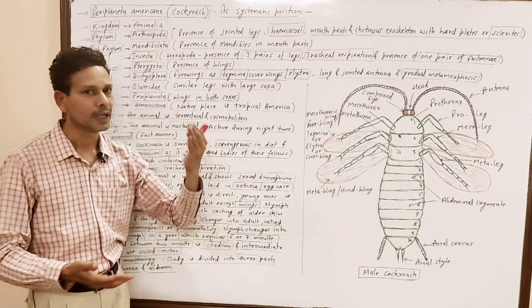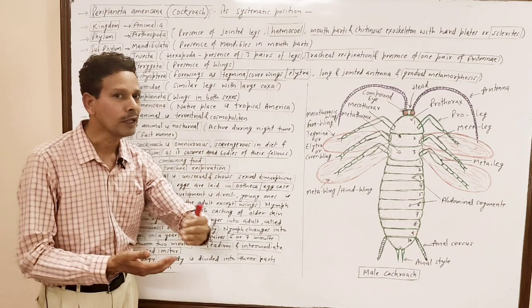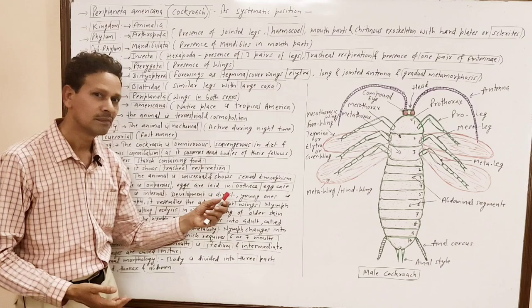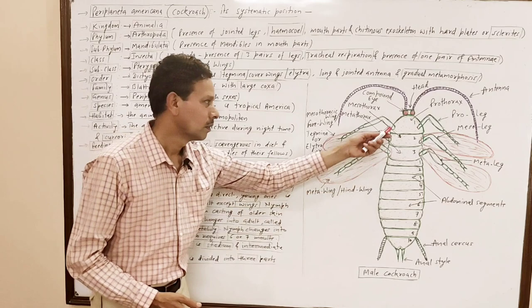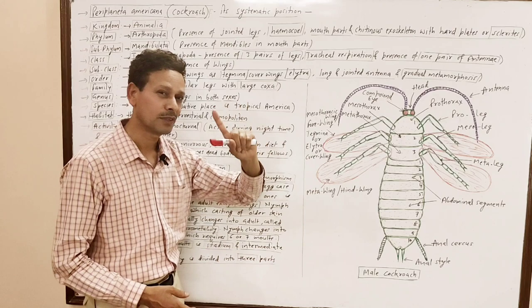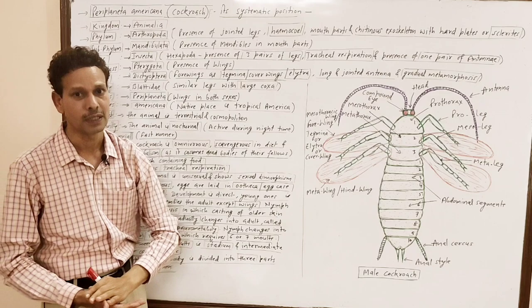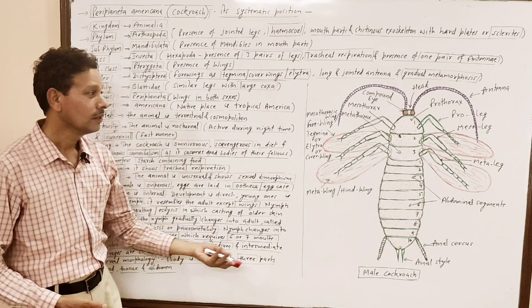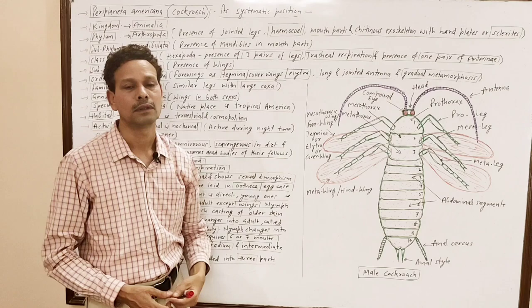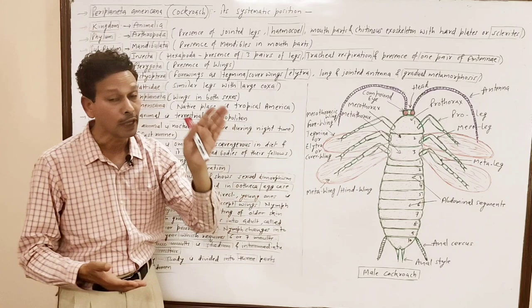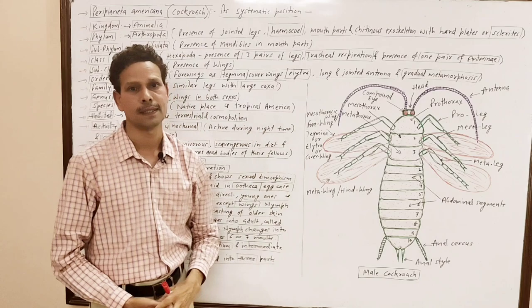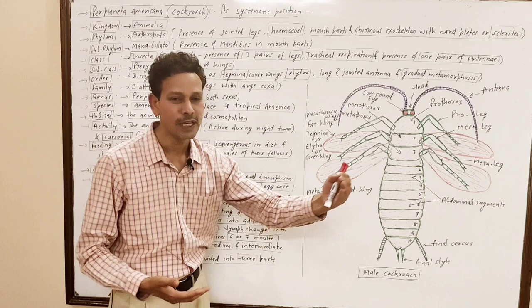The young one resembles the adult and is named nymph. The nymph is smaller in size and resembles the adult in structure, except that in the adult — named imago — wings are present, but in the nymph the wings are absent. The nymph undergoes molting or ecdysis, which is a slow and gradual process taking about 12 months, during which the nymph gradually changes into an adult imago.